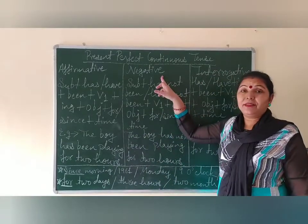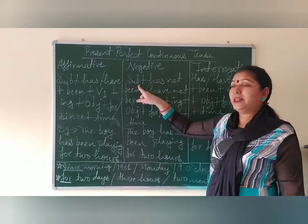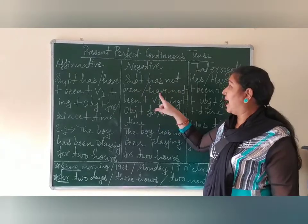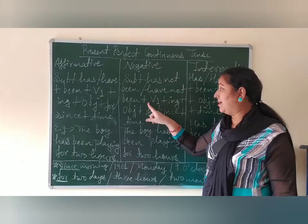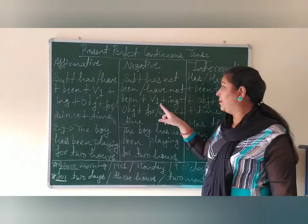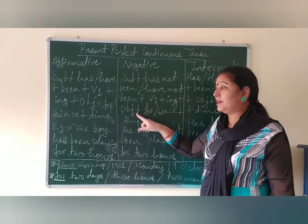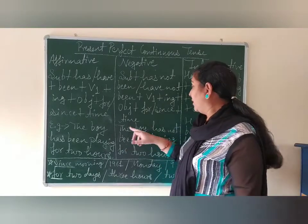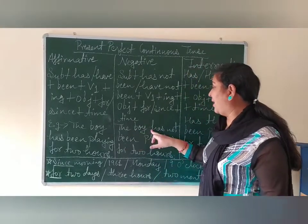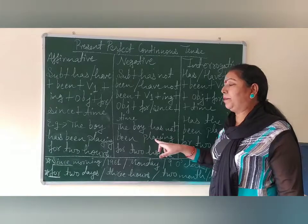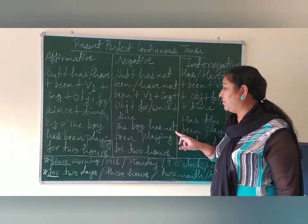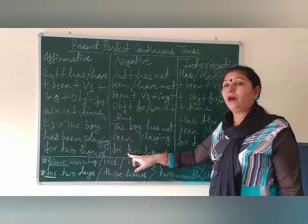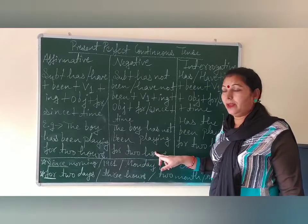Secondly, Negative sentences. The structure is: Subject + Has not been / Have not been + verb first form + ING + object, then For or Since according to time. For example: 'The boy has not been playing for 2 hours.' Because it is negative, we are using Not here — has not been playing for 2 hours.